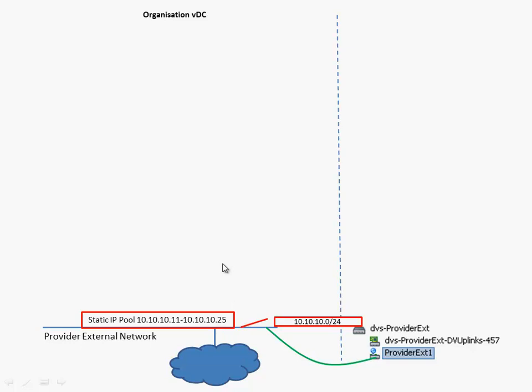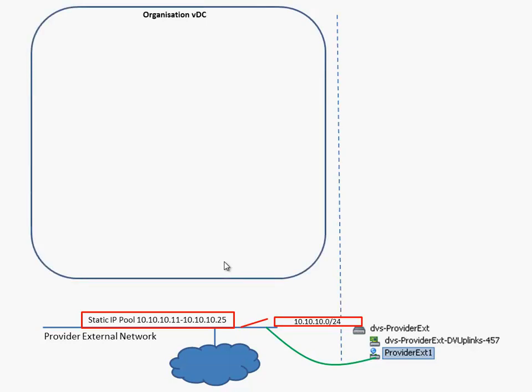The next thing we're going to build up is an organization virtual data center. An organization can contain multiple organization virtual data centers, and a vCloud administrator can create an organization network that can be connected to the provider external network. First, let's create an organization, and within the organization an organization virtual data center, and then let's create a pool.